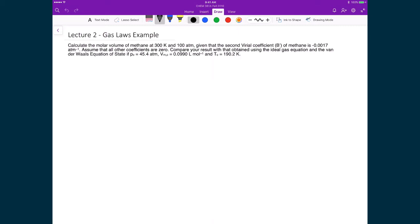So let's now do an example where we incorporate all three of these equations of state that we've just spent the last 10 minutes defining. So this problem that I have written down here is, calculate the molar volume of methane at 300 Kelvin and 100 atm, given that the second virial coefficient B' of methane is negative 0.0017 per atmosphere.